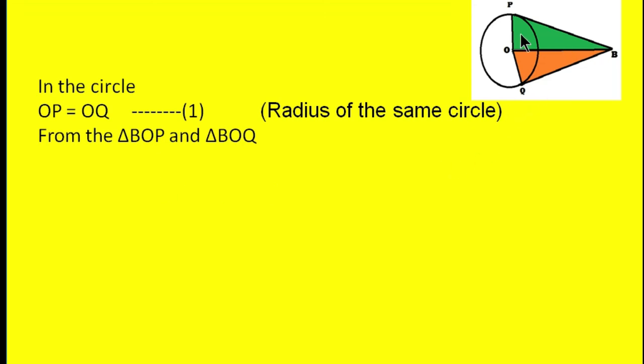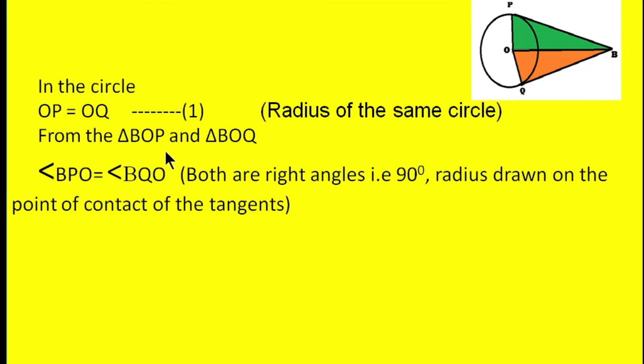We can have angle BPO equal to angle BQO. Why? Because both are 90-degree right angles. Why is it 90 degrees? Because we know the radius drawn at the point of contact of the tangent gives us a right angle. That is why angle BPO equals 90 degrees and BQO equals 90 degrees.